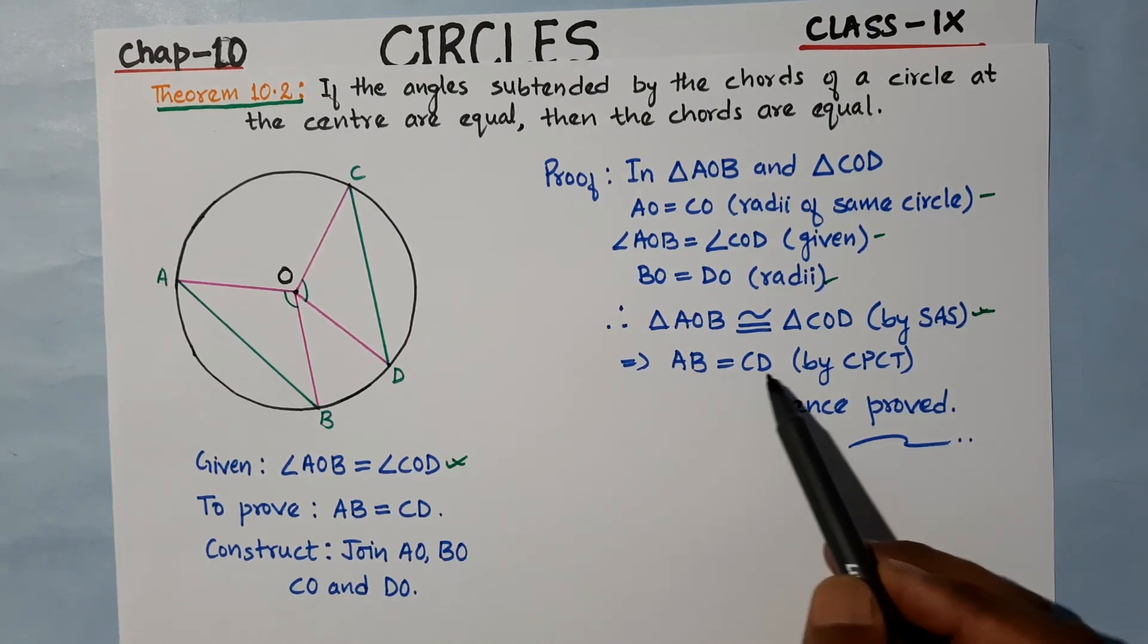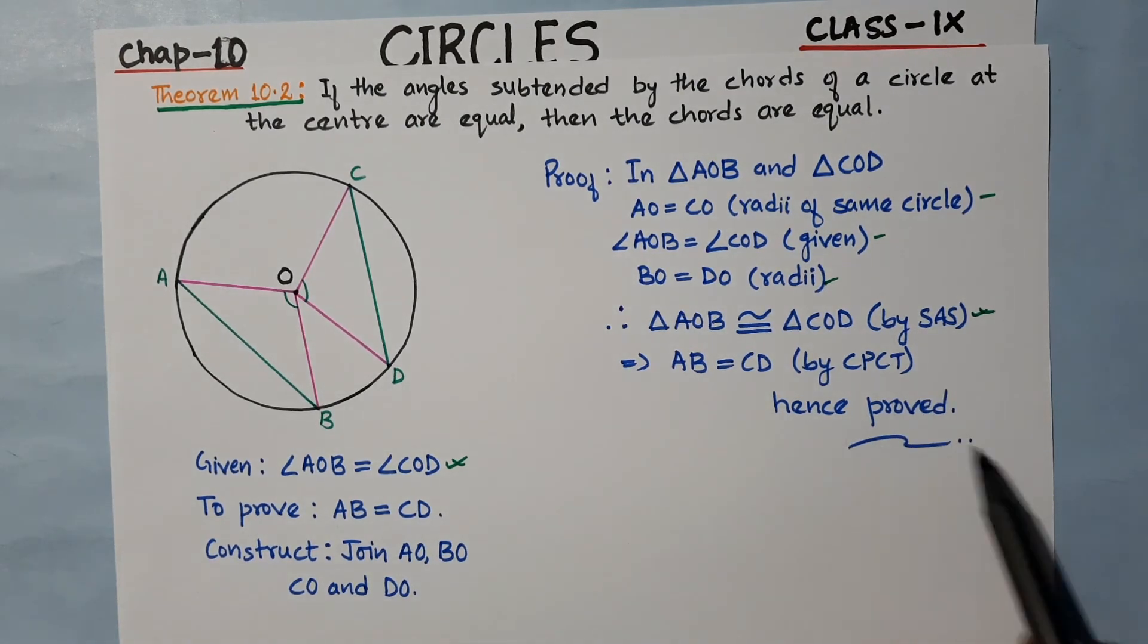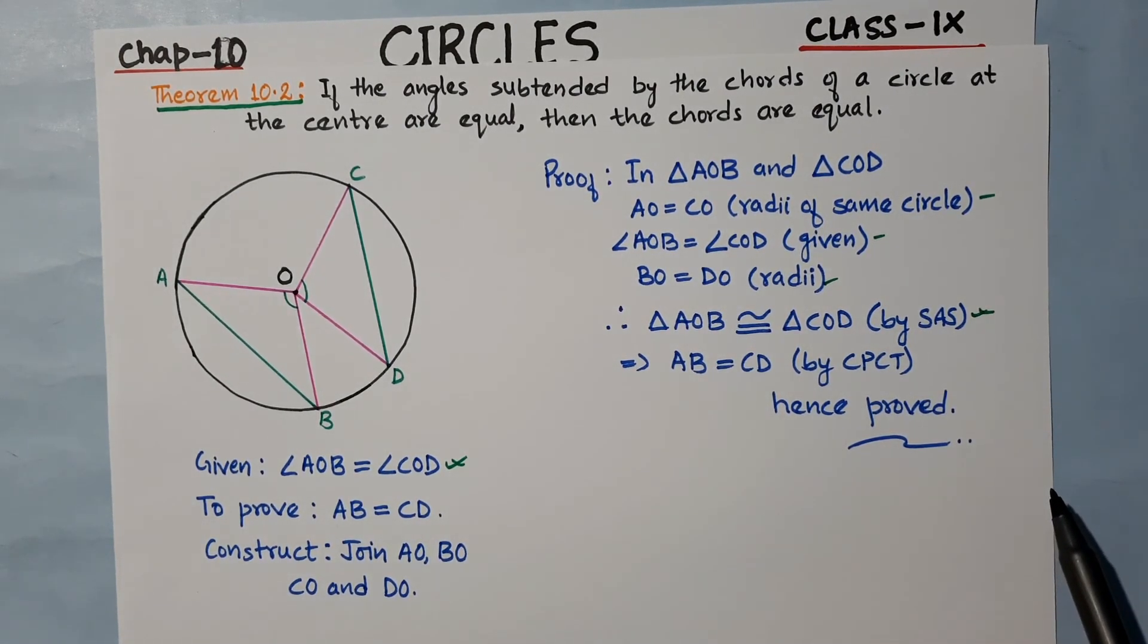So AB equals CD by CPCT - Corresponding Parts of Congruent Triangles. Hence proved, Theorem 10.2.